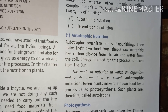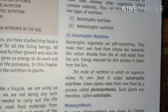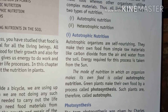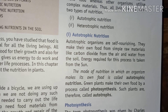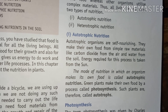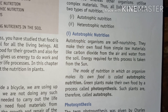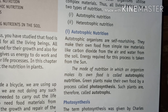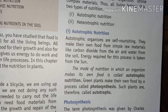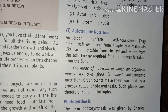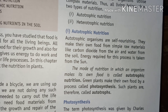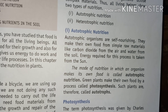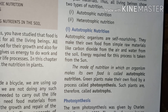The mode of nutrition in which an organism makes its own food is called autotrophic nutrition. Green plants make their own food by a process called photosynthesis. Green plants are therefore called autotrophs.